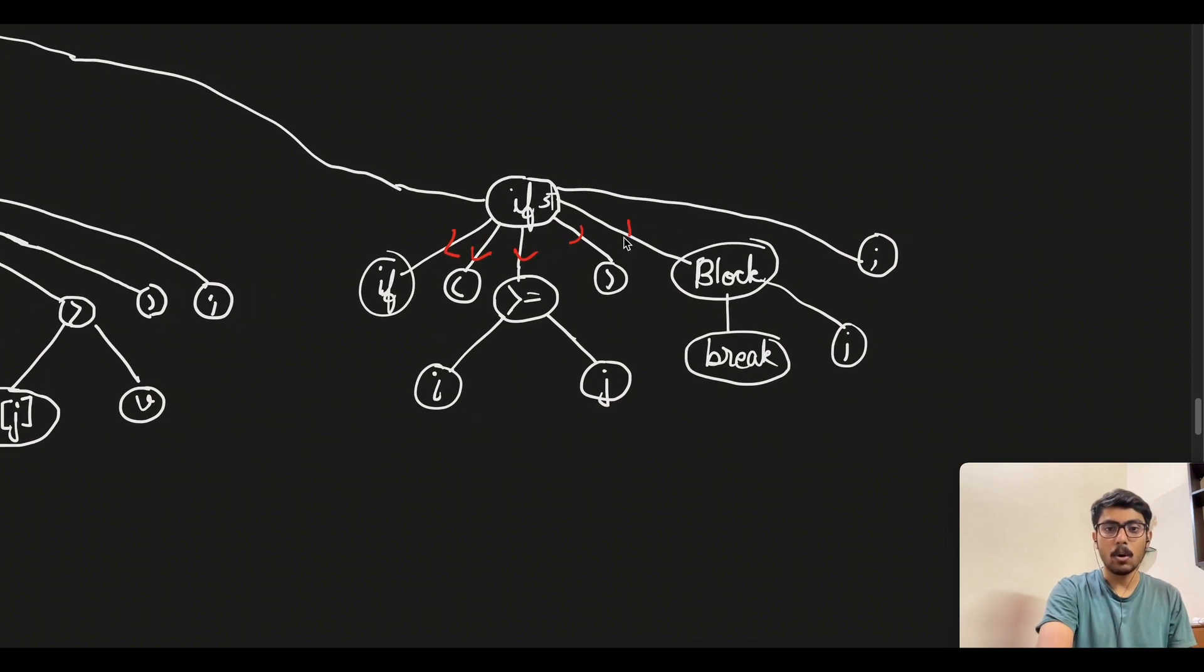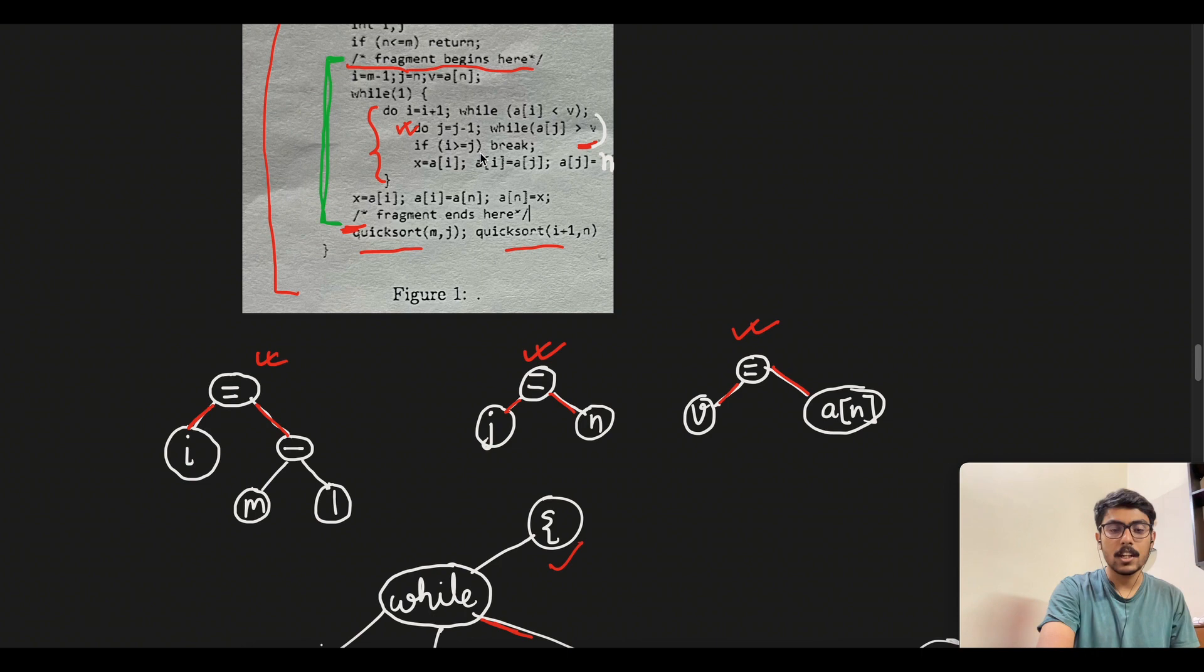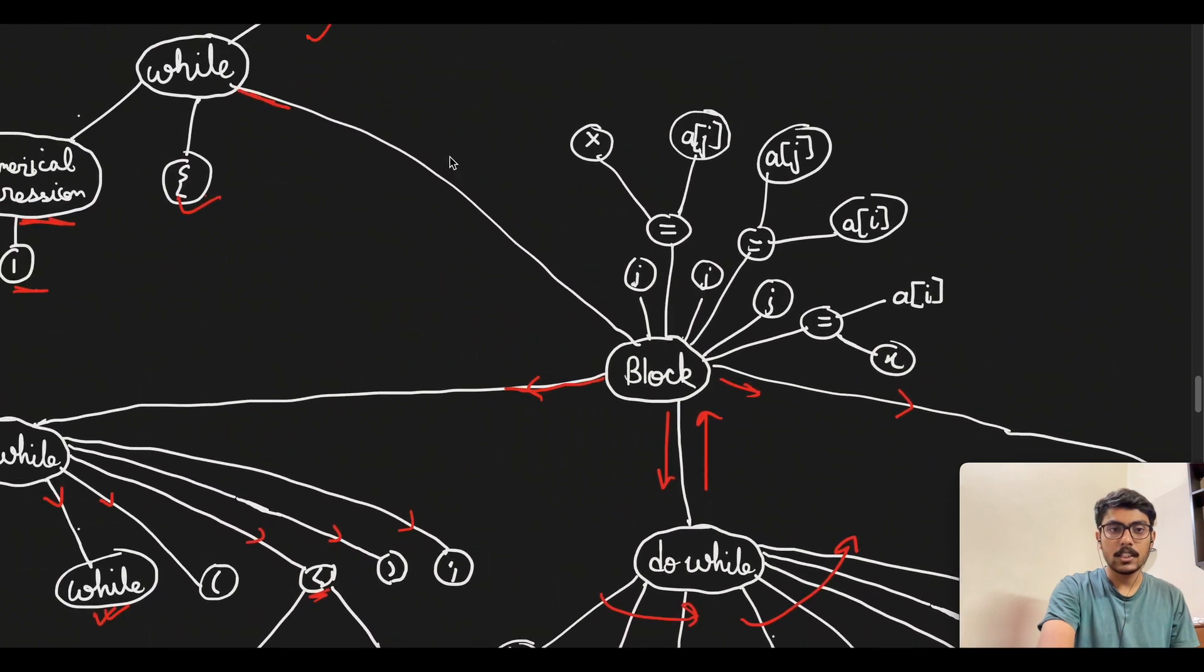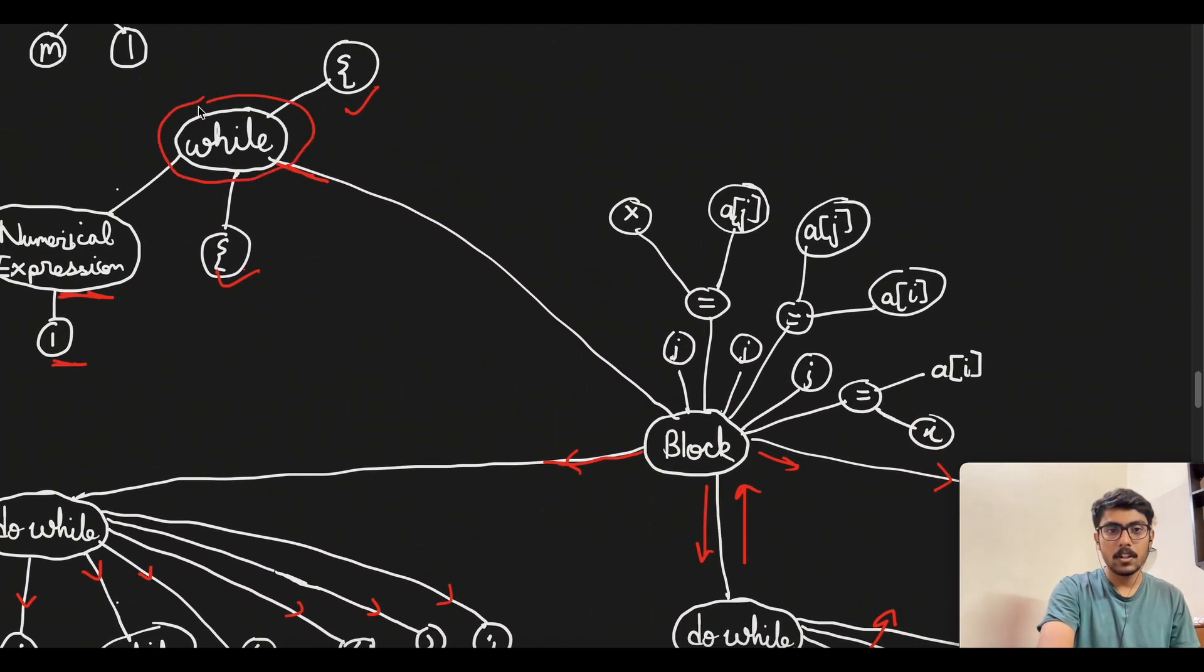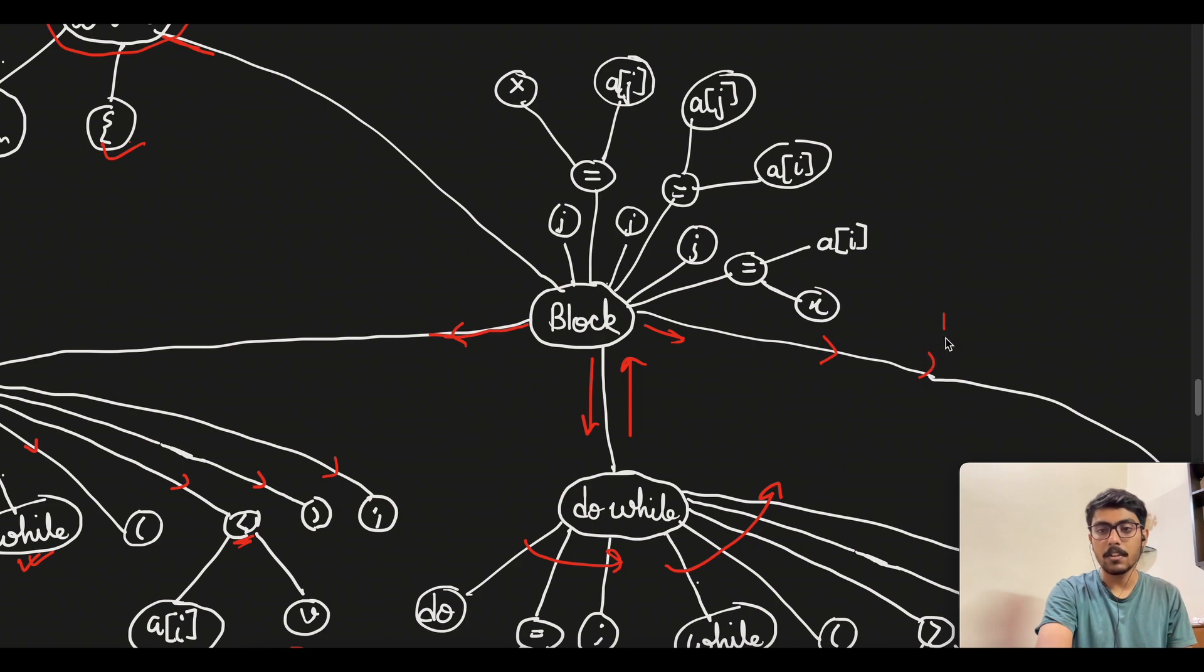We have the if statement and then if open curly braces i is greater than equal to j, then we have this block. This block is executed if the if statement is true. Then we have block break i. If we go back to the code, we see that if i is greater than equal to j then we break from this particular loop and exit. If it is not so, then we will simply use the other statements that are there in this do while loop. Inside this while loop we are here, and if we are not thrown by this branch, that is if break doesn't execute.